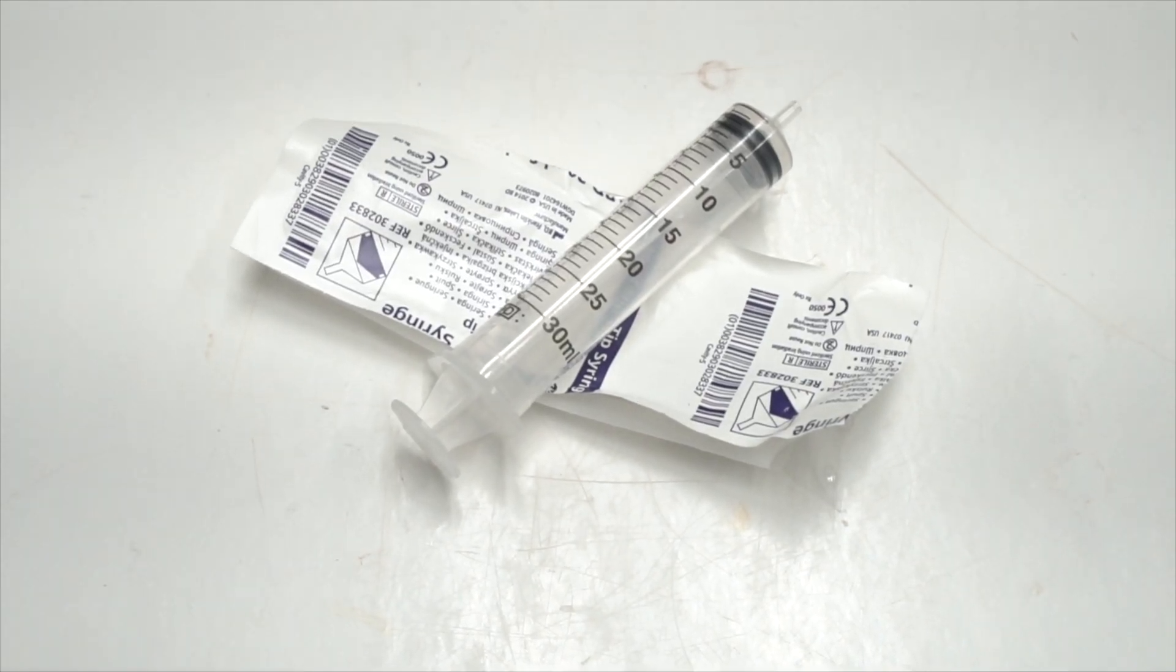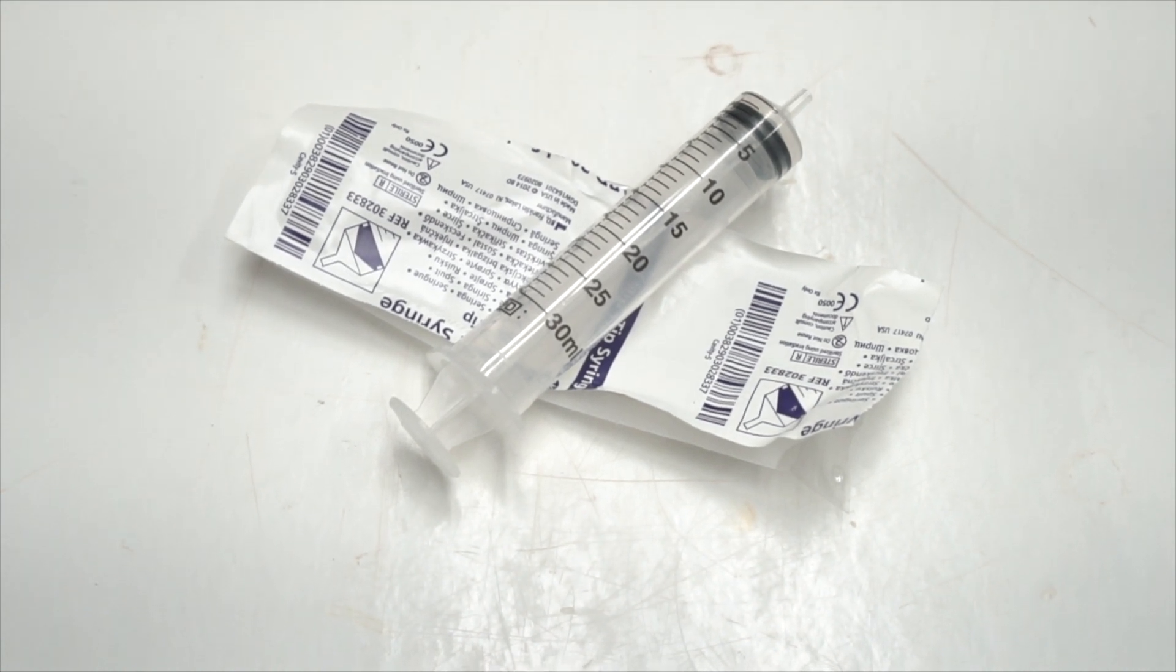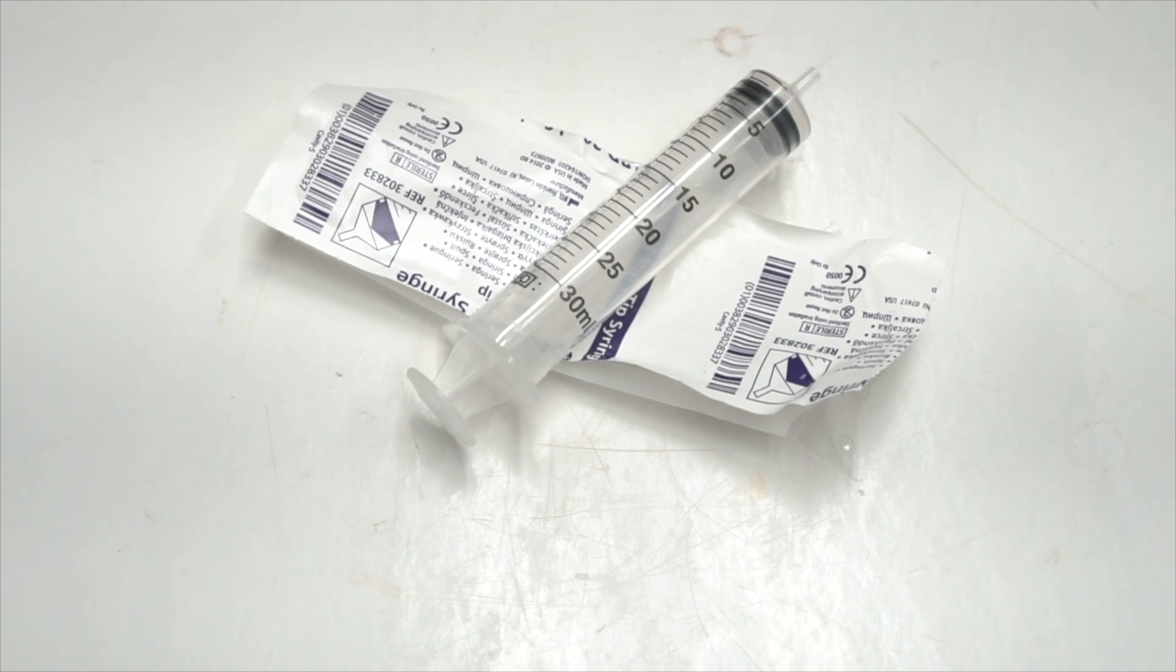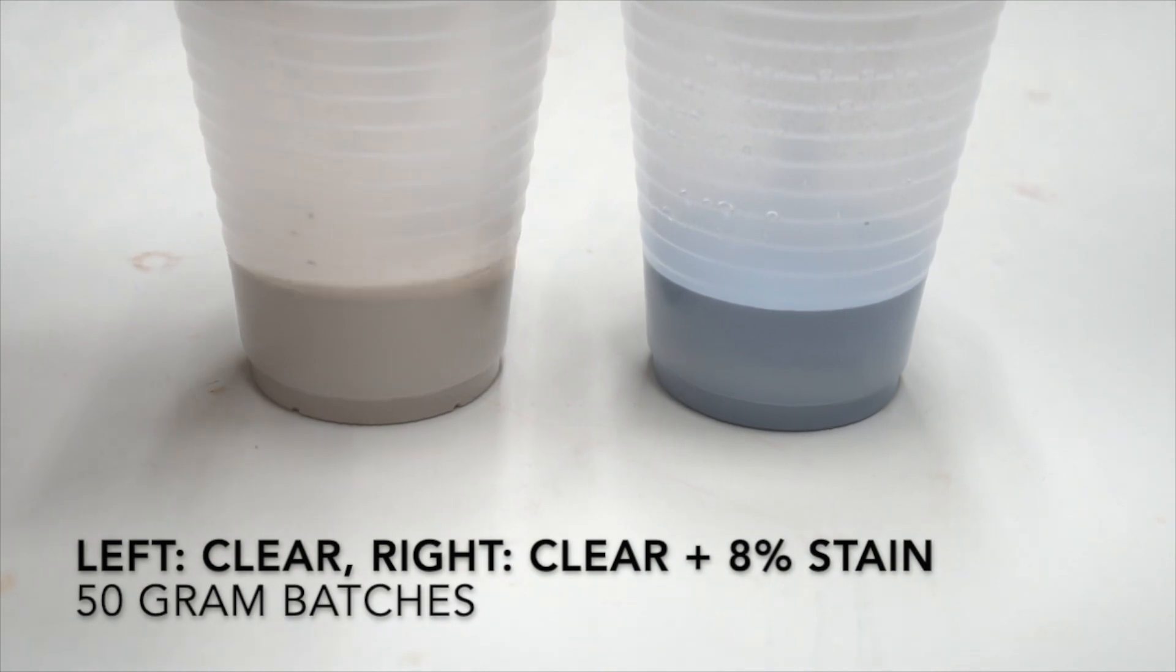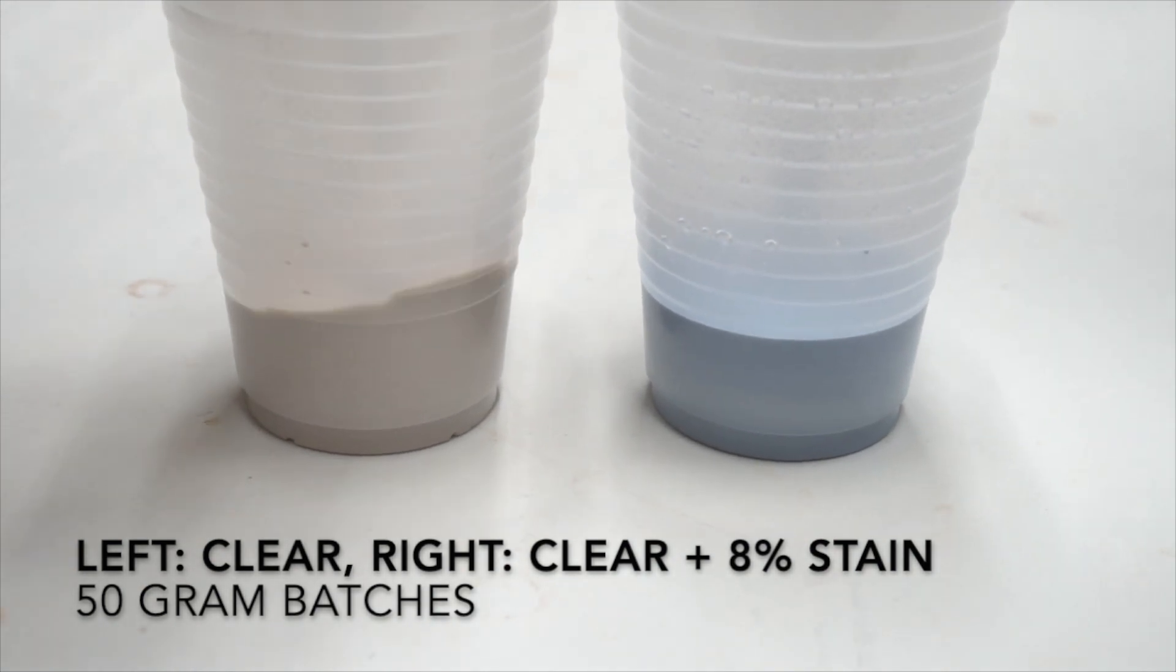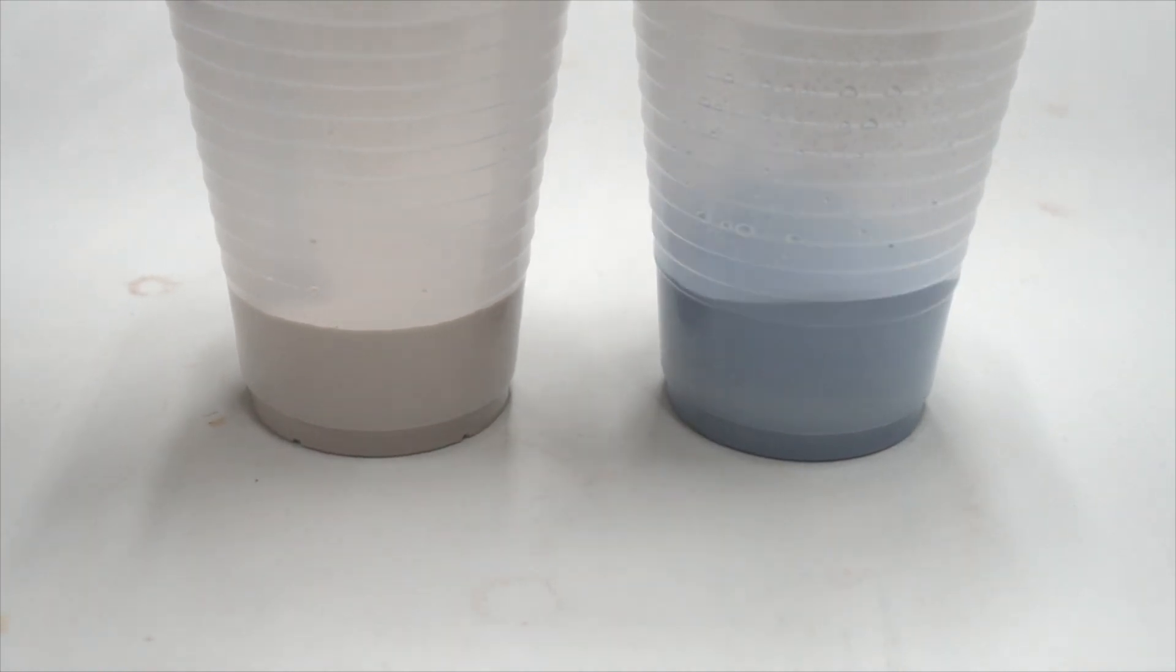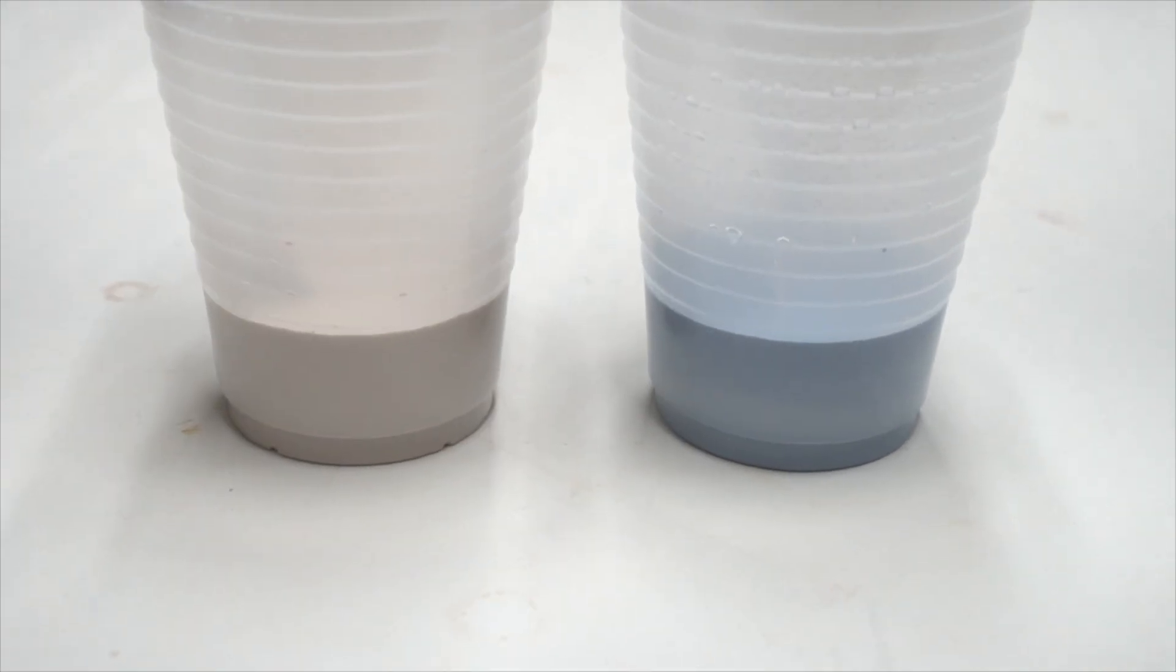Here you see I'm using a BD syringe. It has a very nice rubber stopper, which makes it very easy to pull in and out. Some syringes don't have this, and you shouldn't buy them. Here are my left and right glazes, already mixed and sieved, and I've added water so that they are of equal volume. The left glaze is the clear glaze. The right glaze is the clear glaze with 8% added mason stain.